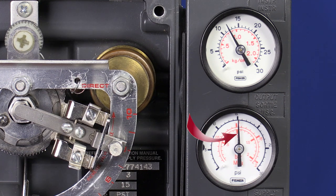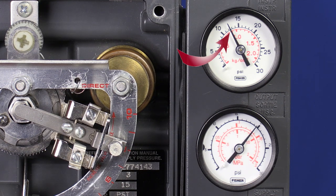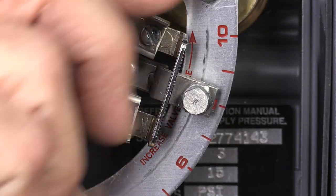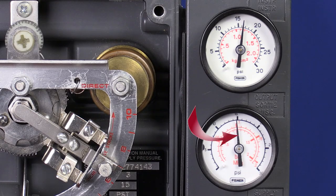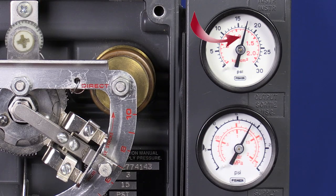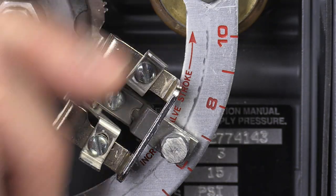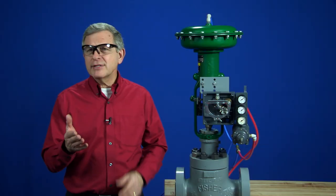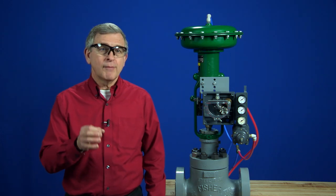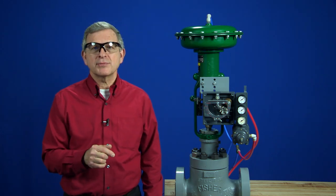If it saturates too soon, or before 14 and a half, move the flapper assembly to a smaller number. If it saturates too late or above 15, move the flapper to a larger number. Every time you move the flapper assembly, though, you must go back and reset the zero adjustment and then check the span again.